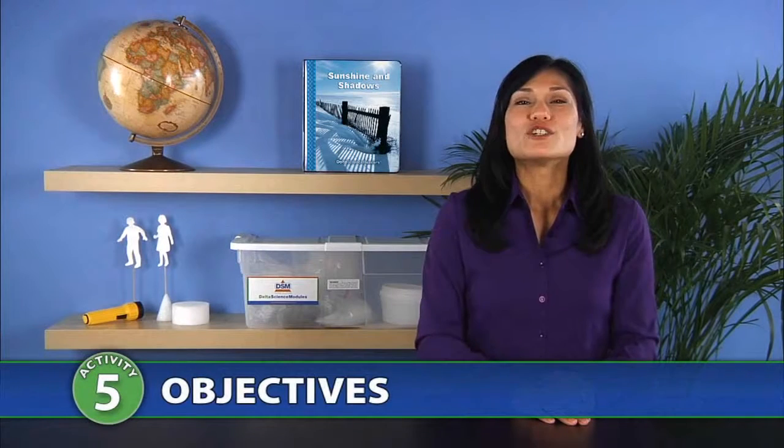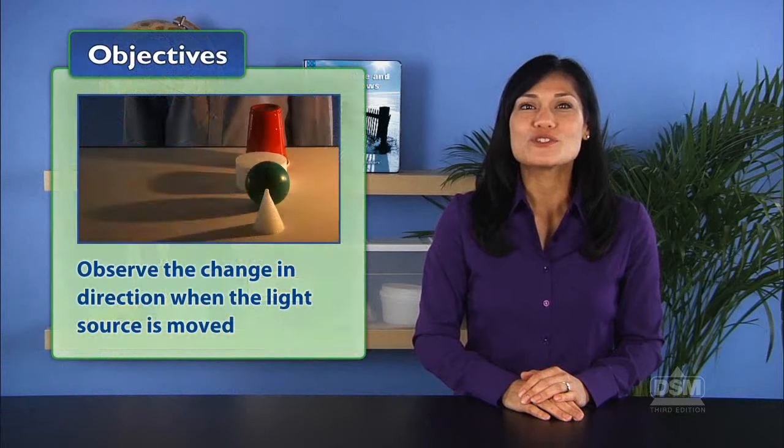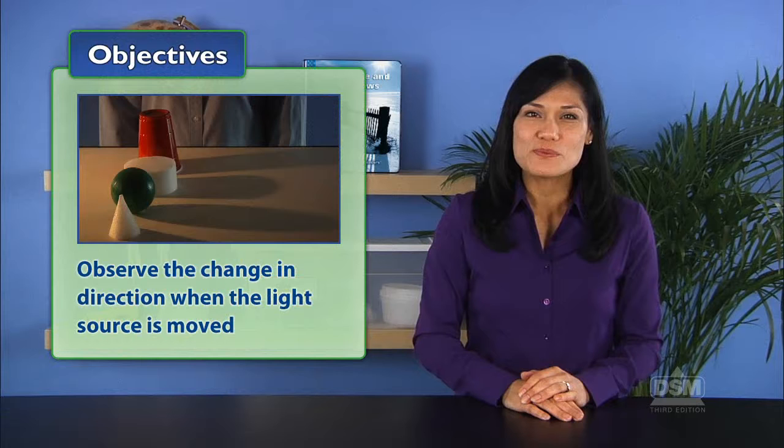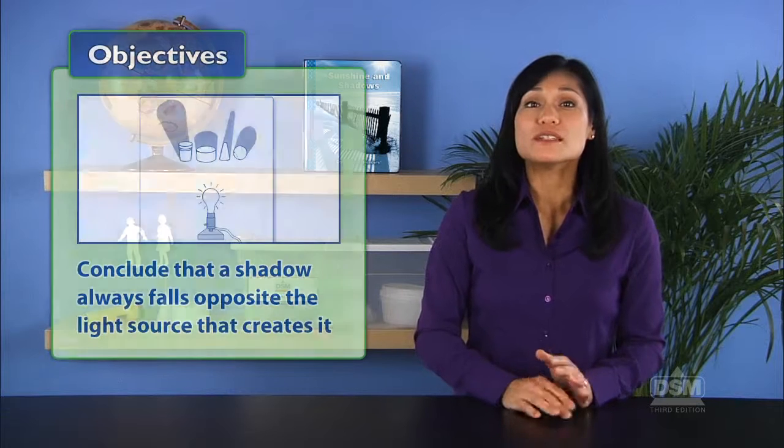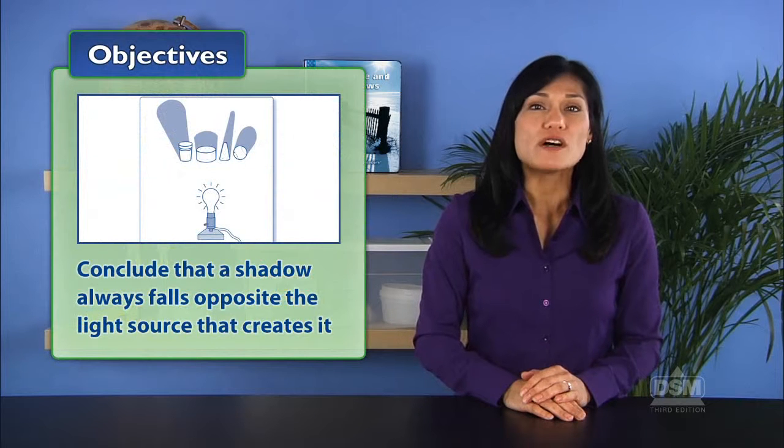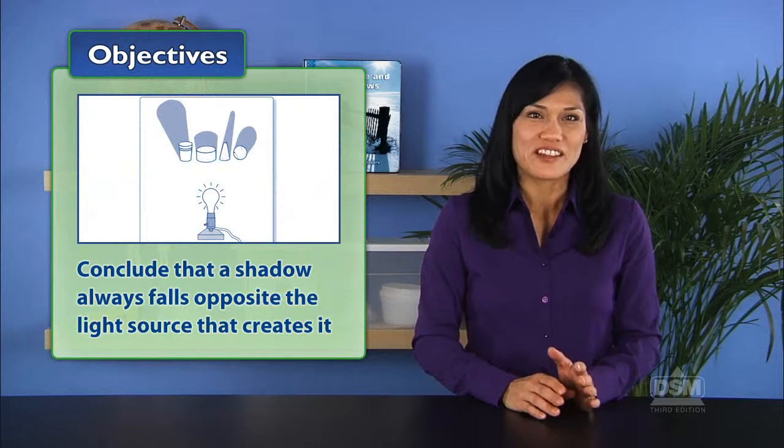In Activity 5, Shadows Opposite Light, students survey indoor and outdoor shadows and observe the change in direction when the light source is moved. Students then conclude that a shadow always falls opposite the light source that creates it.